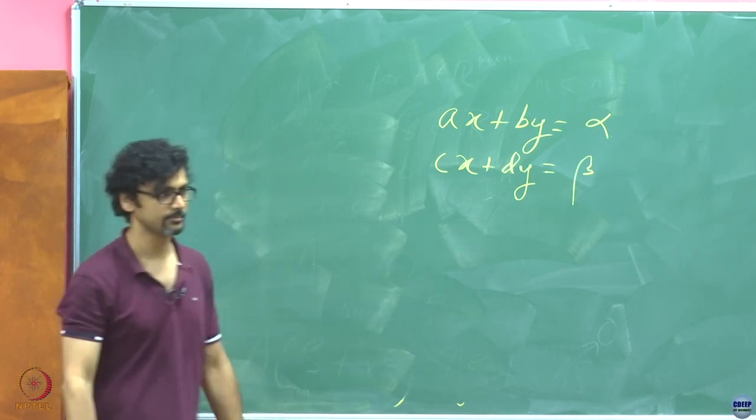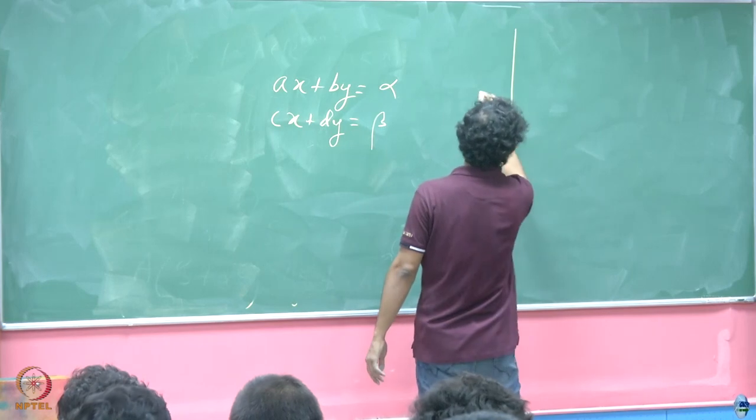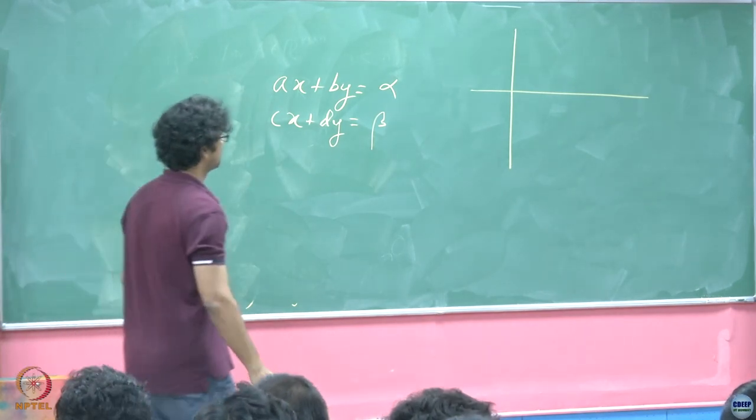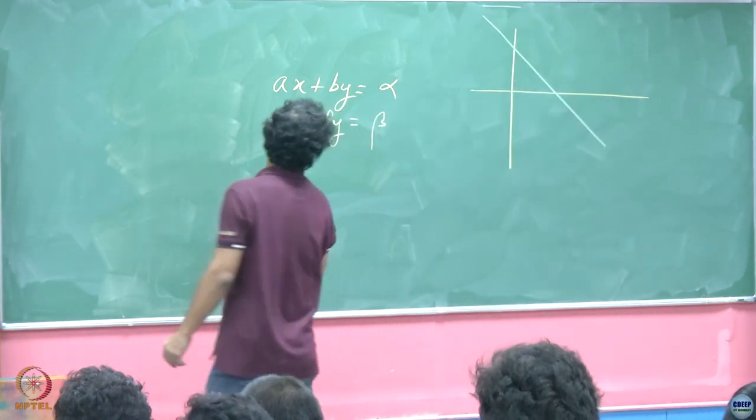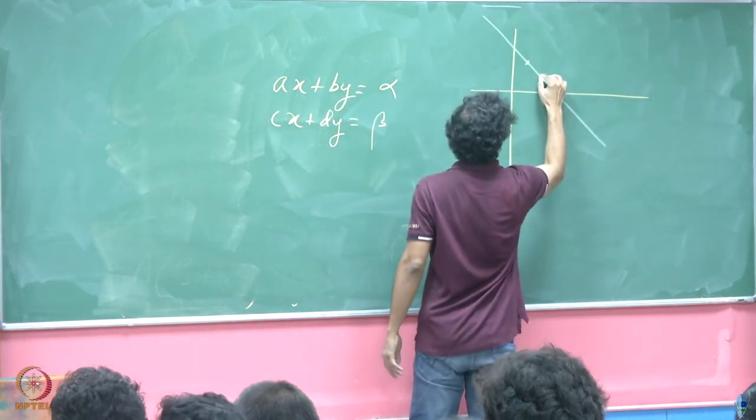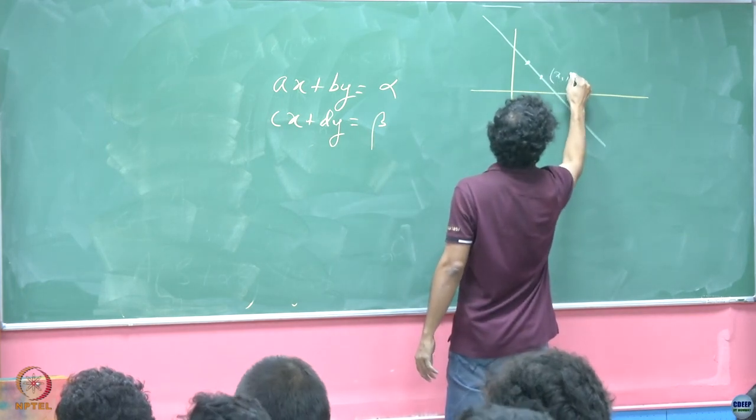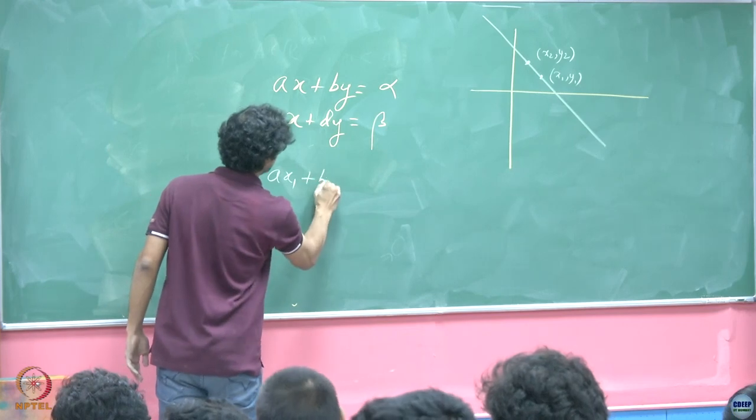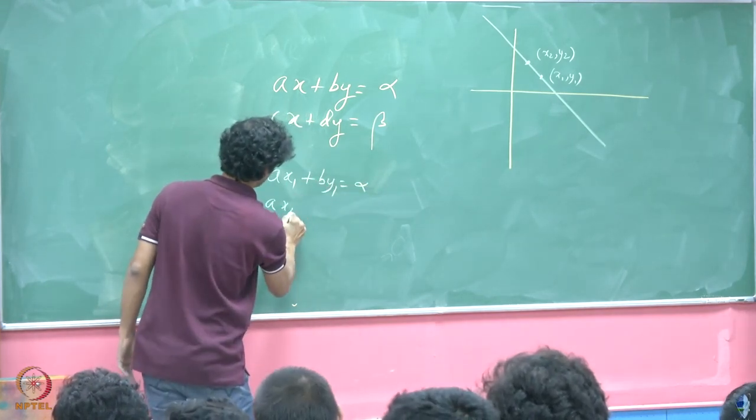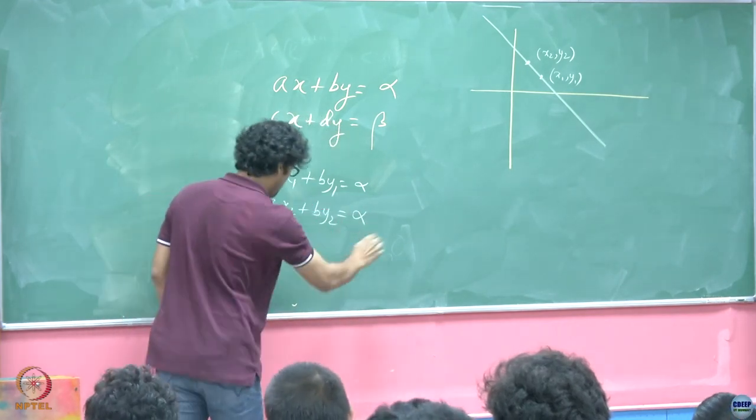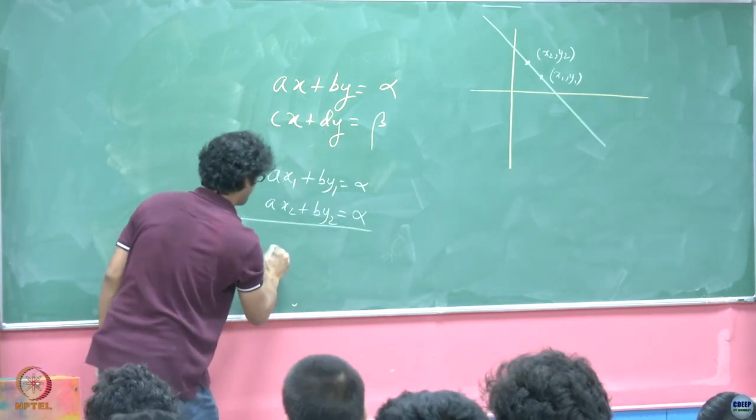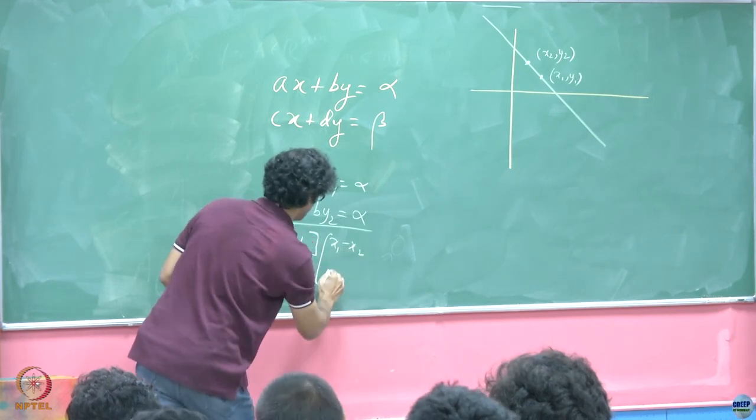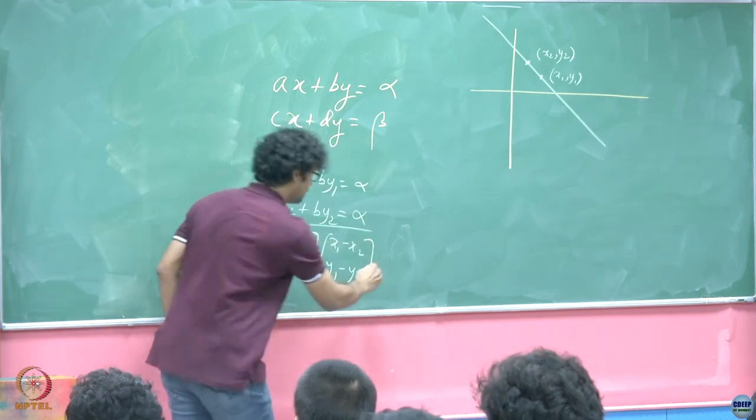So there are different ways of viewing this. One is of course you have Ax plus By equals alpha, Cx plus Dy equals beta. So when you take Ax plus By equals alpha and you want to sketch this, let us say it is a straight line like this. So you take any two points on this, suppose this is x1 y1 and this is x2 y2.